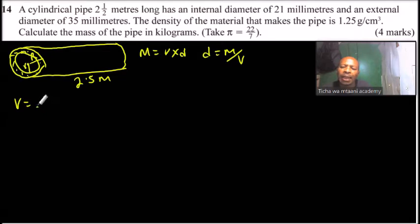To get the volume, we say volume is equals to pi R squared, that is the volume of the area of the outer circle, minus the area of the inner circle, pi r squared. And you multiply by the height. So we have R squared minus r squared times h.